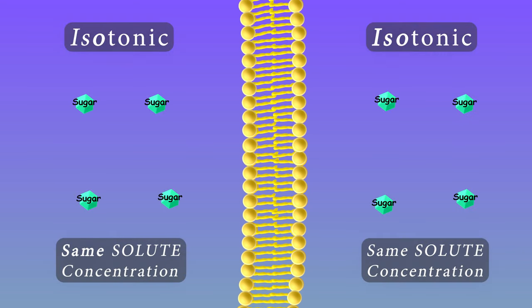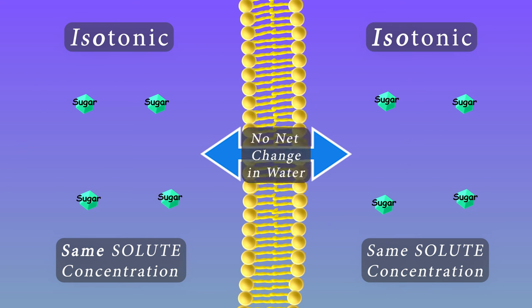Isotonic: If two solutions have the same solute concentrations, they are isotonic. The amount of water moving between isotonic solutions is equal. So there is no net change in water amounts between the two solutions.